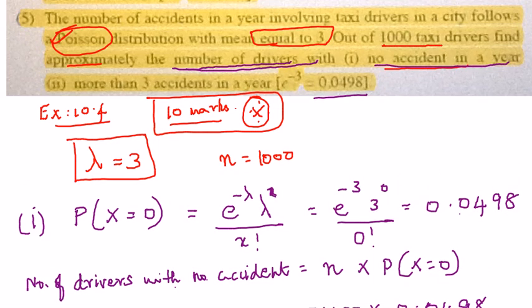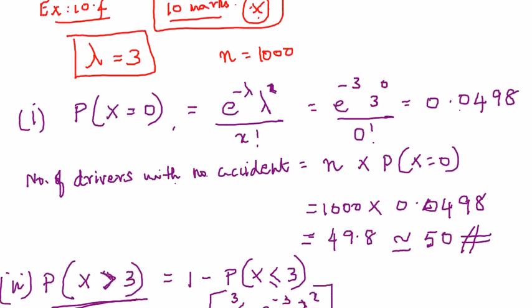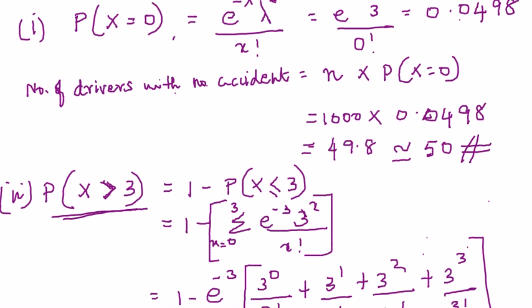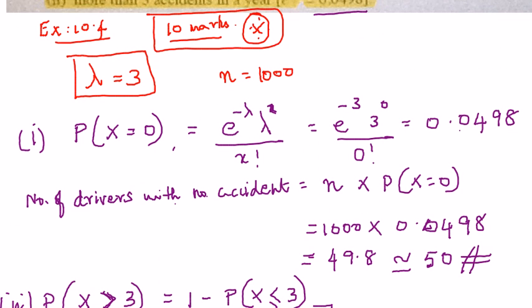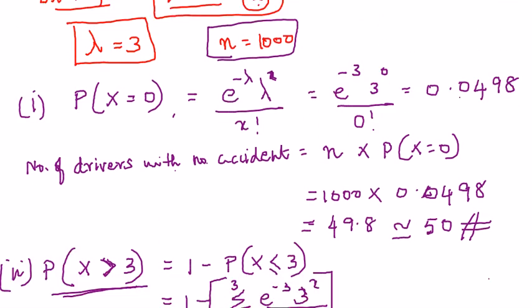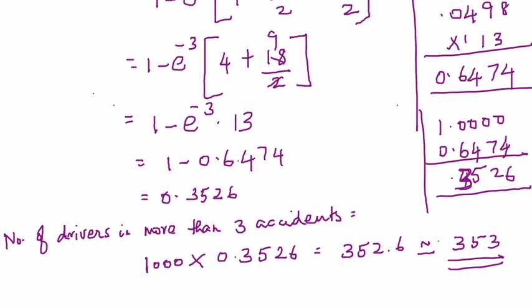So, very simple sum. Just remember that you are not going to stop with probability, but you are going to find the number of drivers involved in so many accidents. So, remember to multiply your probability with the number given here, with n. That's the only difference in this sum, right. Very, very easy sum for 10 marks, okay.